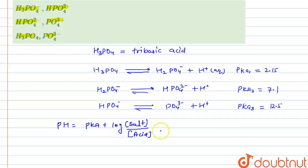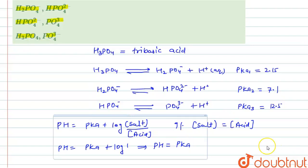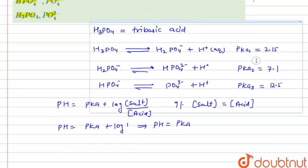If the concentration of salt equals the concentration of acid, then pH = pKa + log(1), which equals pKa. So when [salt] = [acid], pH = pKa. According to the question, we need pH equal to 7.